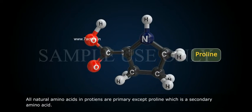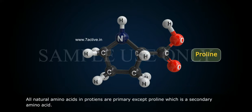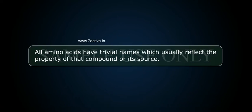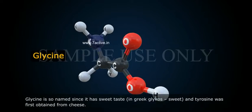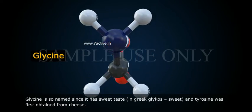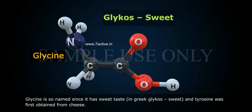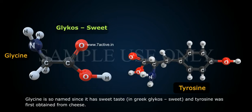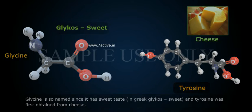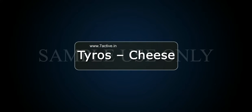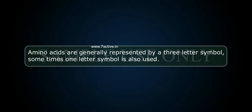All natural amino acids in proteins are primary, except proline, which is a secondary amino acid. All amino acids have trivial names which usually reflect the property of that compound or its source. For example, glycine is so named since it has a sweet taste — in Greek, 'glycos' means sweet — and tyrosine was first obtained from cheese; in Greek, 'tyros' means cheese. Amino acids are generally represented by a three-letter symbol, and sometimes a one-letter symbol is also used.